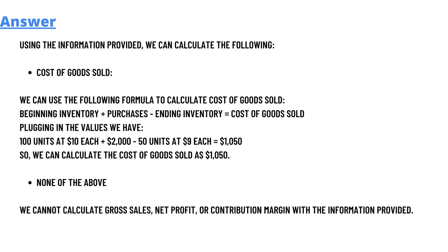We can use the formula to calculate cost of goods sold: beginning inventory plus purchases minus ending inventory equals cost of goods sold.